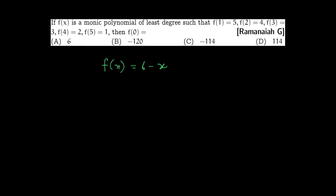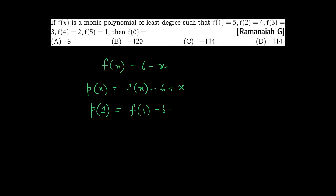I am going to take a polynomial P(x). Let P(x) equal f(x) minus 6 plus x. Then P(1) equals f(1) minus 6 plus 1, which equals 5 minus 5, giving answer 0.